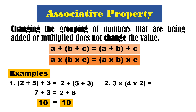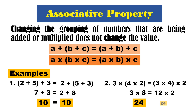Next example for multiplication: we have 3 times the quantity of 4 times 2 equal to the quantity of 3 times 4 times 2. Ginroup natin 4 times 2 sa kanan o kaliwa. So we have 3 times 8 equals 24, and then 3 times 4 is 12 times 2 is also 24. Equal! Therefore, changing the grouping of numbers that are being multiplied does not change the value.